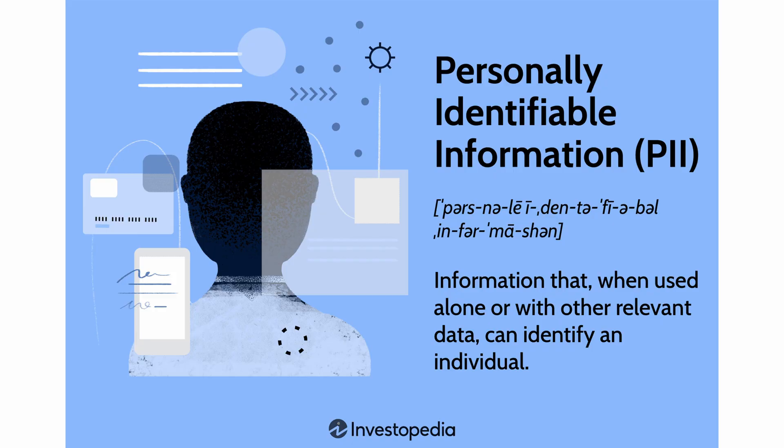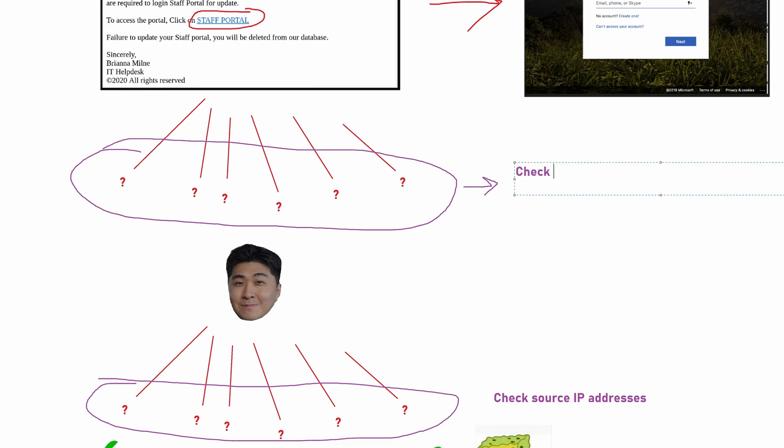Now we've completed the important step of investigating the blast radius and containing the attack. We need to move on to the next step, which is to figure out what we've potentially lost — we need to understand if there was any data exfiltration. This stage is very important as part of the investigation so we can understand the scope of the damage. Most organizations use Microsoft OneDrive or SharePoint as their main file sharing or file management solution. So we need to grab the list of users we've identified and run a search on all their activities on OneDrive and SharePoint, filtering for any matches on those bad IP addresses or any suspicious source login locations.